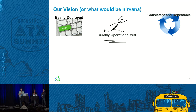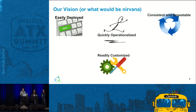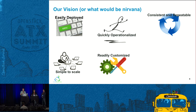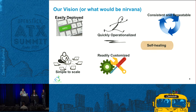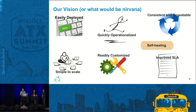We'd like it to be quickly operationalized — ideally a fully functioning stack in five to ten minutes, including the ability to monitor and do straightforward in-service upgrades. It should be simple to scale: hands-off expansion to maximum scale to meet demand, then retraction when demand subsides. And surely it should be able to self-heal upon failure — primary focus on maximizing availability, with failure cause analysis secondary — leading to improved SLAs.